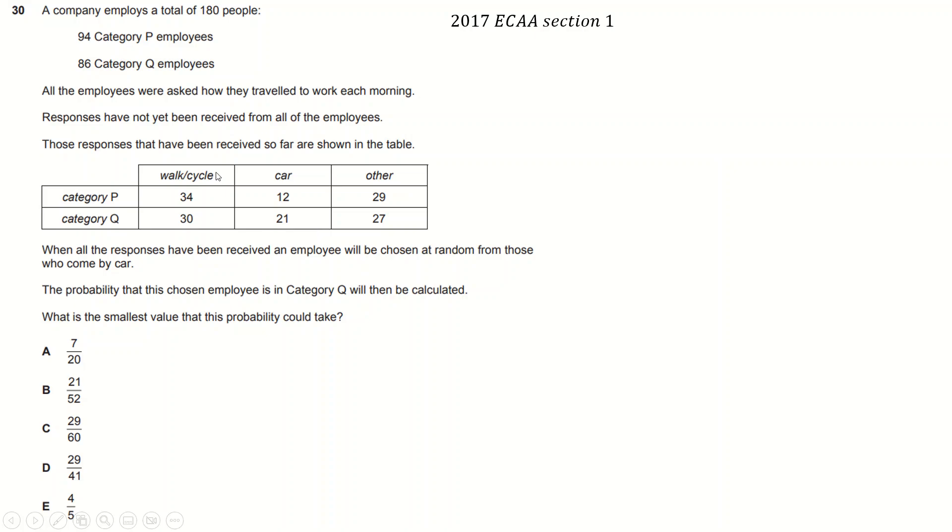I think this is the last one. It's quite an interesting question as well. I could definitely see this on paper two, Tamura. There's a lot of waffle here. It's about a survey with two types of employees, and it says the survey isn't finished. So the first thing to work out is how many employees are left to do this. So add these up and you find that there are 19 people missing from Category P and add these up you find there are 8 missing from Category Q. When all the responses are together, they're going to take someone randomly who uses a car and they're going to take the Q, the probability of that person is in Q.